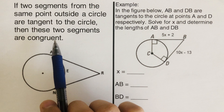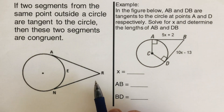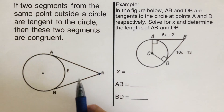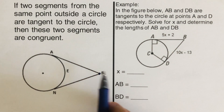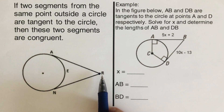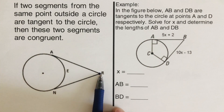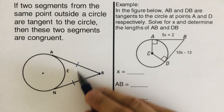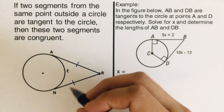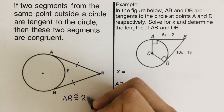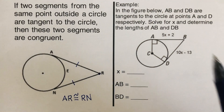Now let's move on to the second property of tangent. If two segments from the same point outside a circle are tangent to the circle, then these two segments are congruent. In this picture, point R is outside the circle. AR is a tangent with point of tangency A, and RN is a tangent with point of tangency N. The length of AR equals the length of RN — they are congruent. We indicate this with tick marks: line segment AR is congruent to line segment RN.